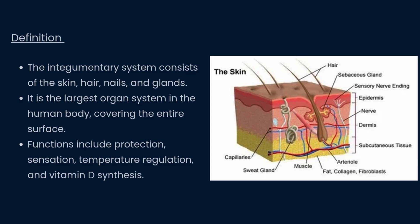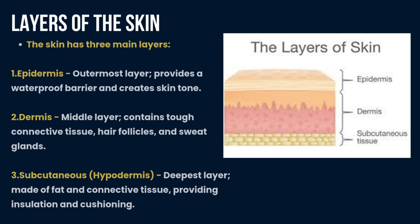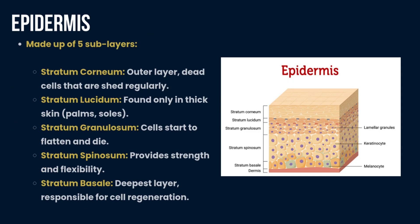The skin has three main layers: epidermis, dermis, and subcutaneous. The epidermis is the outermost layer, providing a waterproof barrier and creating skin tone. The dermis is the middle layer, containing tough connective tissue, hair follicles, and sweat glands. The subcutaneous layer, also called the hypodermis, is the deepest layer, made of fat and connective tissue providing insulation and cushioning. You can see the image of these three layers.